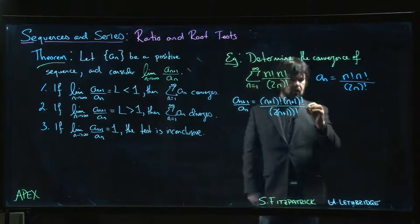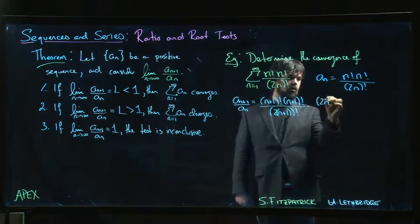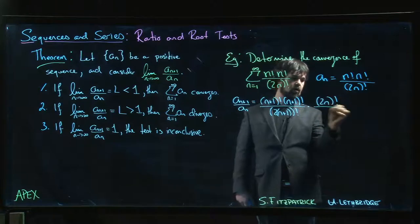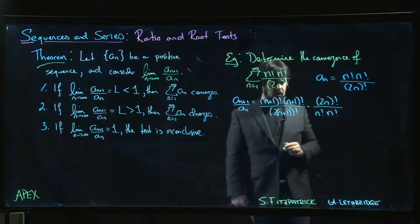Okay. Multiply by 1 over A_n. So we flip this thing over: 2n factorial, n factorial, n factorial.